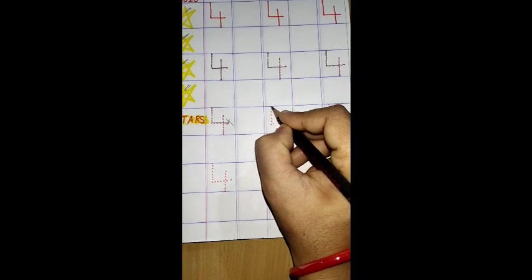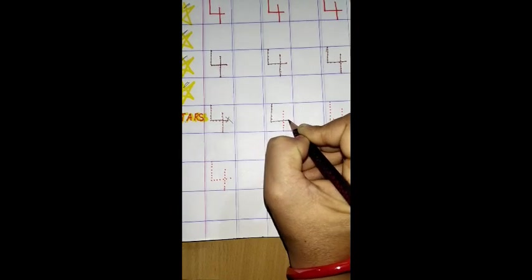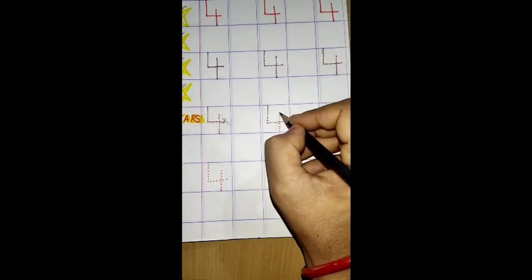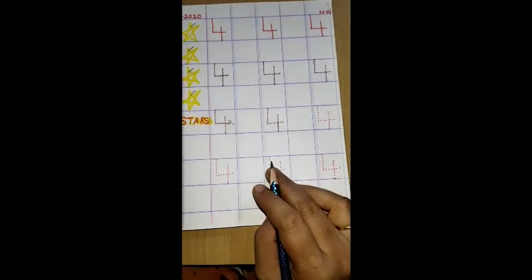Aap ko kaise likhna hai. Top se start karenge, first make standing line, then sleeping line, standing line. Four.